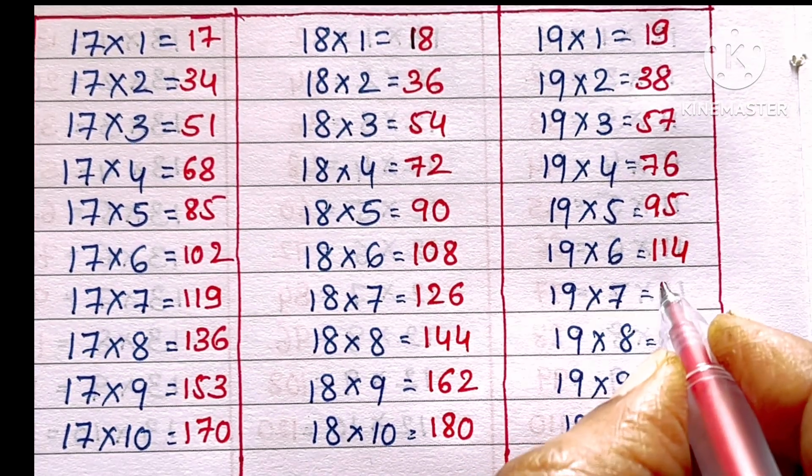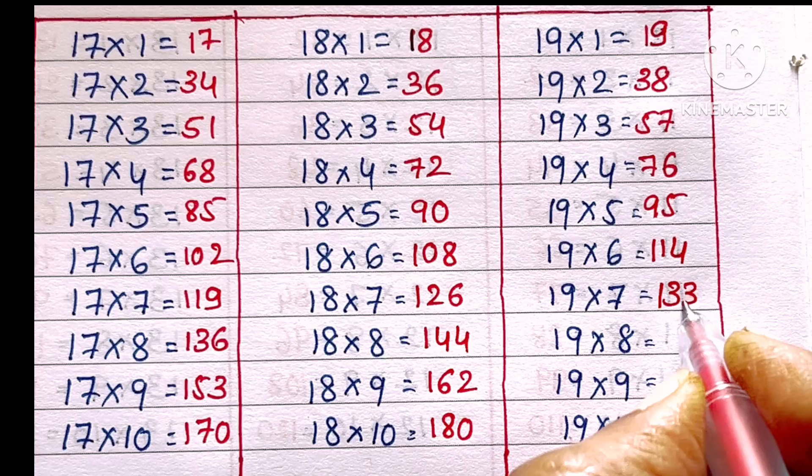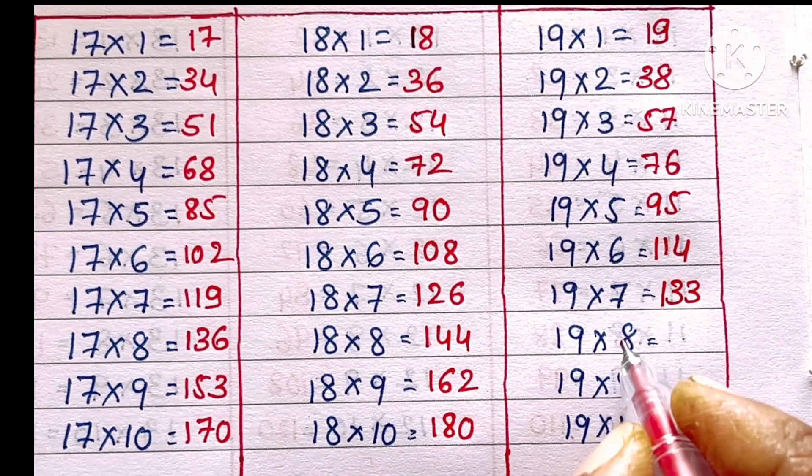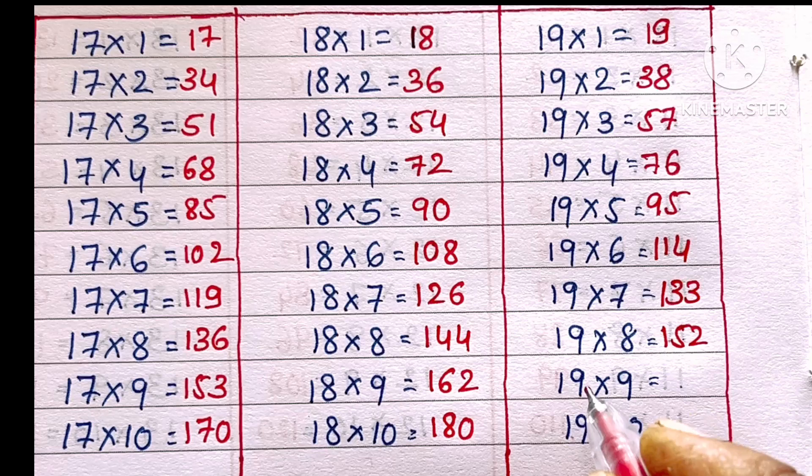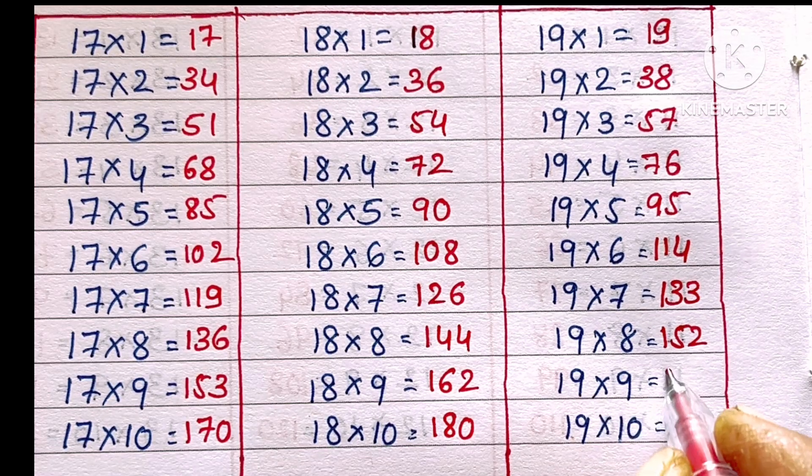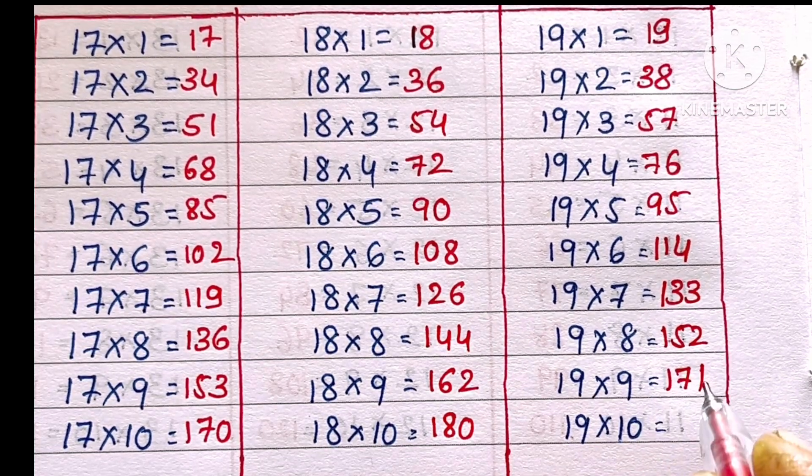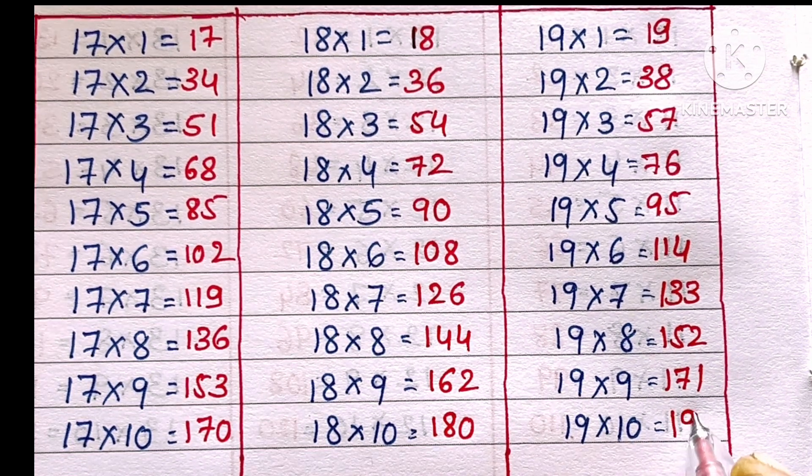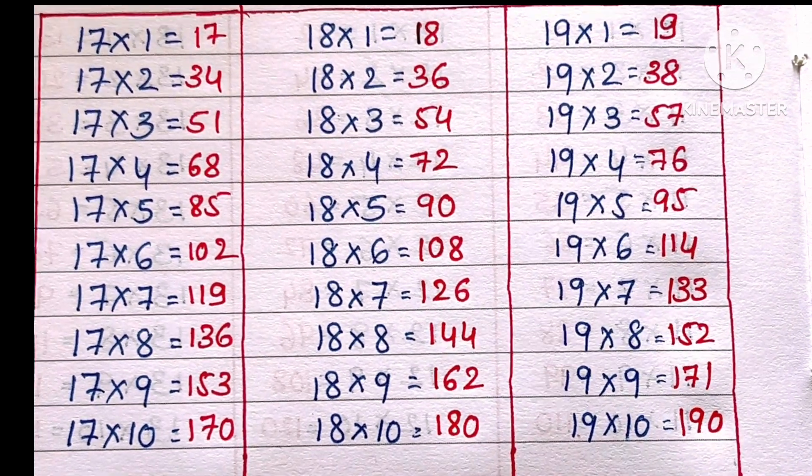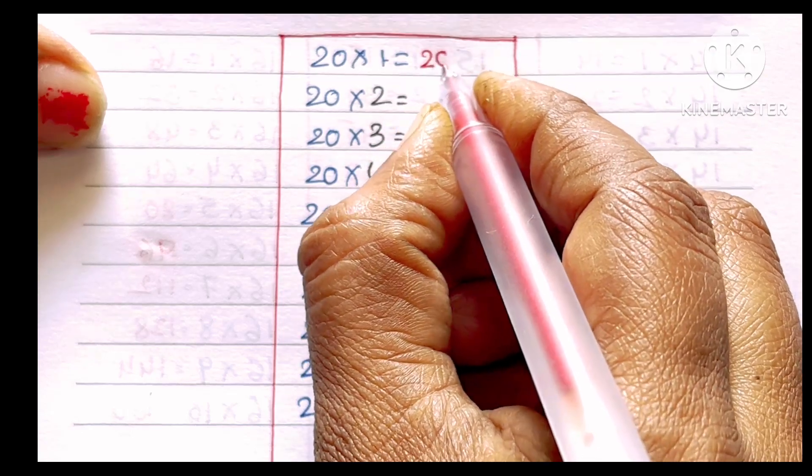19 sevens are 133, 19 eights are 152, 19 nines are 171, 19 tens are 190.